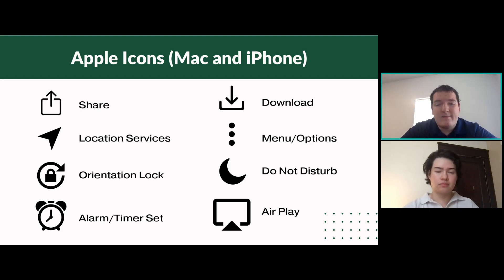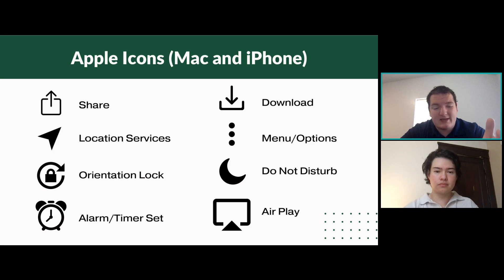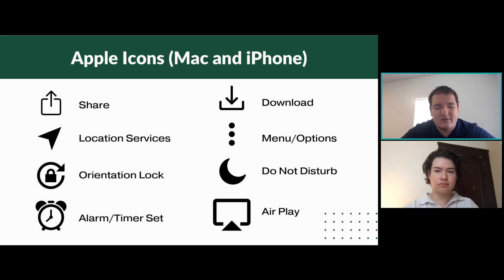The next one is Do Not Disturb. You can turn this on from the dropdown settings when you slide down from the top. It means if people call you it goes straight to voicemail — it won't pop up a notification or alert you. If they text you, it won't alert you either. It's for when you're in a meeting and want your phone completely quiet. On updated iPhones, it'll tell someone texting you that your phone is on Do Not Disturb, and if it's urgent they can hit 'notify anyway.' The last one is the AirPlay icon, which lets you connect your phone or computer to an Apple TV or Wi-Fi enabled TV to show your screen on that TV.